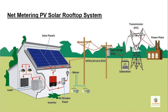Coming back to the on-grid solar system — this is also called a net metering PV solar rooftop system. Starting from the right-hand side, we have power plants from where we get electricity, which comes to our home through transmission lines, substations, and transformers. Finally, electrical poles and service lines get connected to our electricity meter. On the left-hand side we have solar panels. DC power from these panels is converted into AC power by an inverter, then fed to our loads through an AC breaker panel. The output of the electric meter is also connected to the AC breaker, so grid power is also fed to household loads.